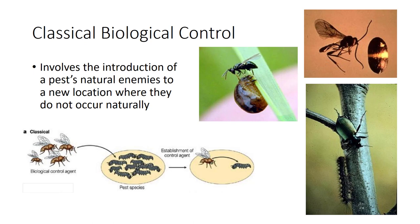Besides the Vedalia beetle, other successful introductions include wasp parasitoids of the cereal leaf beetle, parasitoids of the alfalfa weevil, carabids for gypsy moth suppression, and many more. Despite the many beneficial aspects of this control strategy, negative environmental impacts can arise, such as agents that fail to control pests or exacerbate pest problems where the agent itself becomes a pest. Some may feed on native insects rather than their intended target.